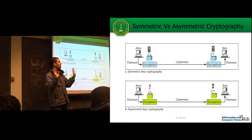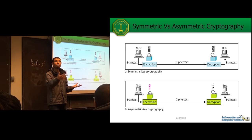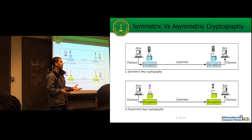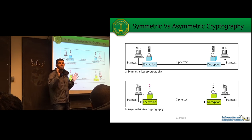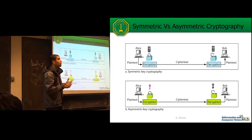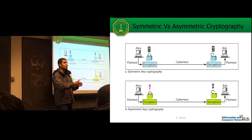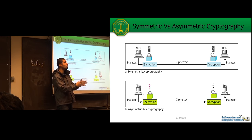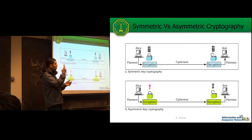With asymmetric cryptography you don't have the key exchange requirement since the public key is public and the private key never needs to be sent. But asymmetric cryptography is slow. In real scenarios like HTTPS, we use both: asymmetric cryptography for key exchange, and once keys are exchanged, symmetric cryptography for data encryption and communication because it is faster.